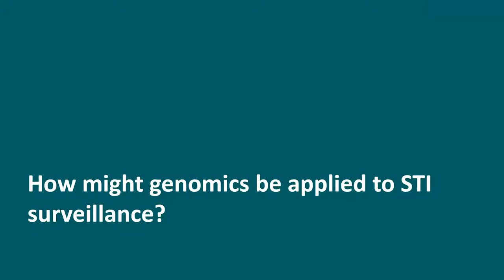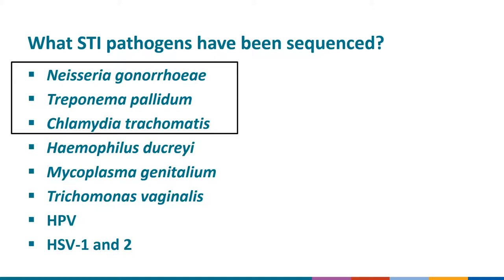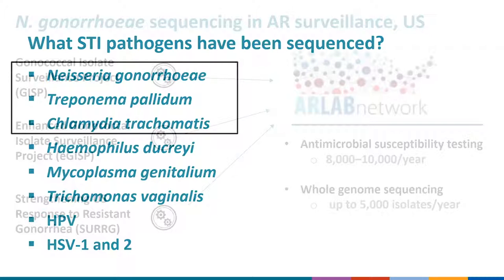How might genomics be applied to STI surveillance? This slide lists STI pathogens that have been sequenced — at least from a single specimen. One challenge is that sequencing bacteria requires live organisms from culture, and because culture of bacterial STIs is often not widely performed, this may limit specimen availability for sequencing. Of these pathogens, sequencing of Neisseria gonorrhoeae has advanced the furthest, and this is where I'll largely focus my discussion of potential surveillance uses — which will also whet your appetite for the excellent talk by Dr. Yonatan Grad.